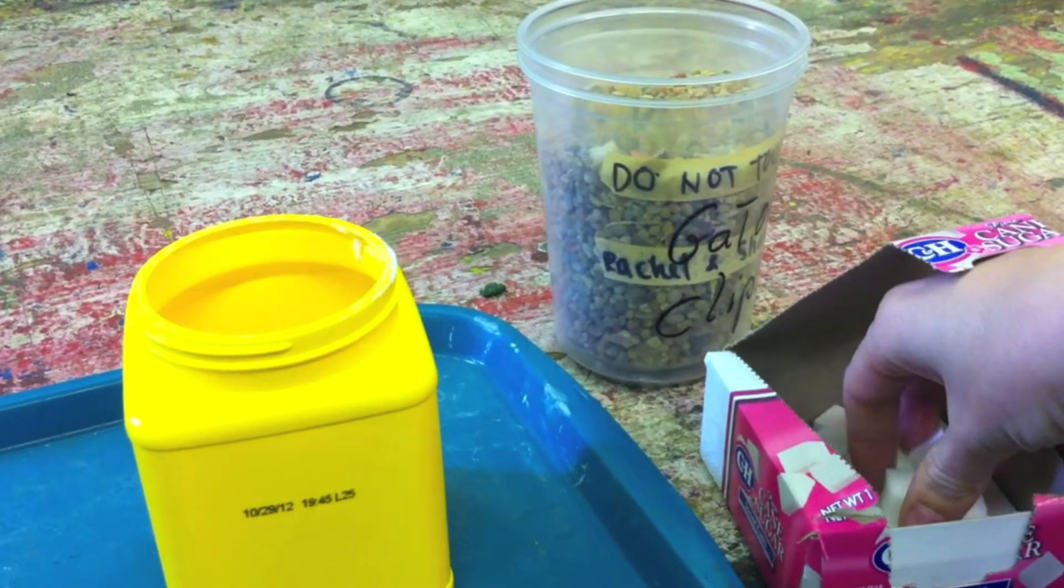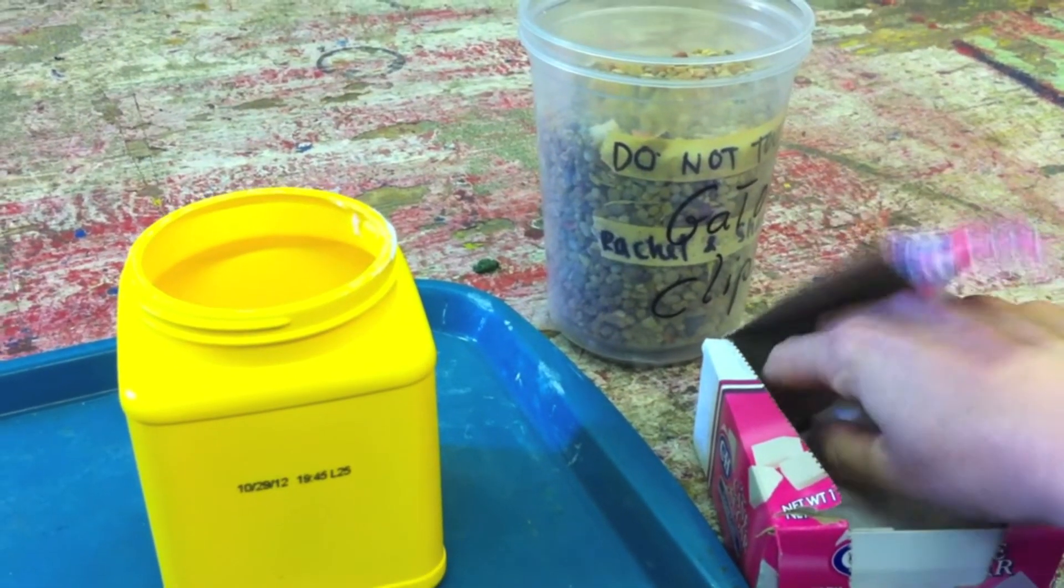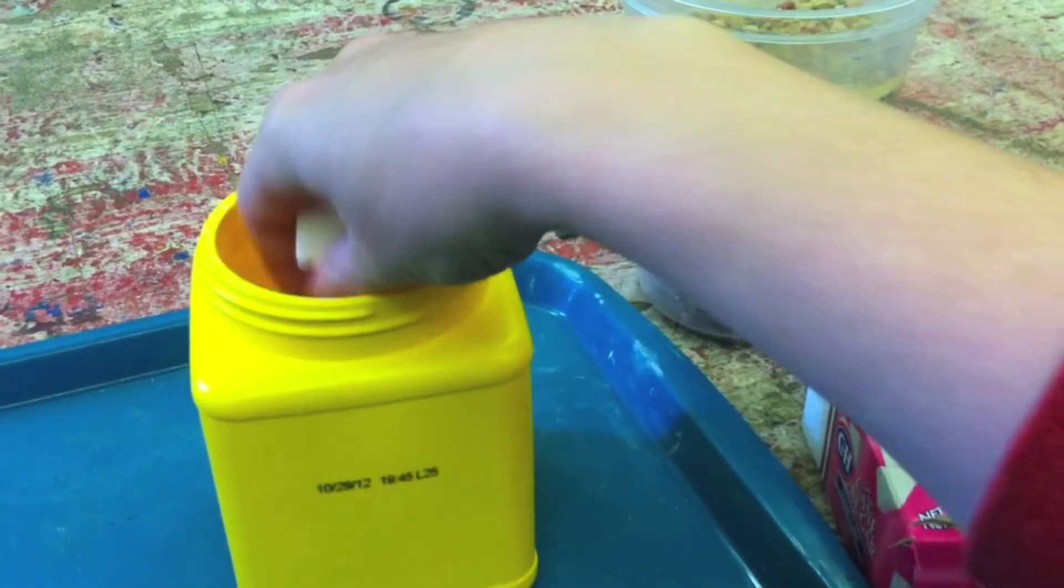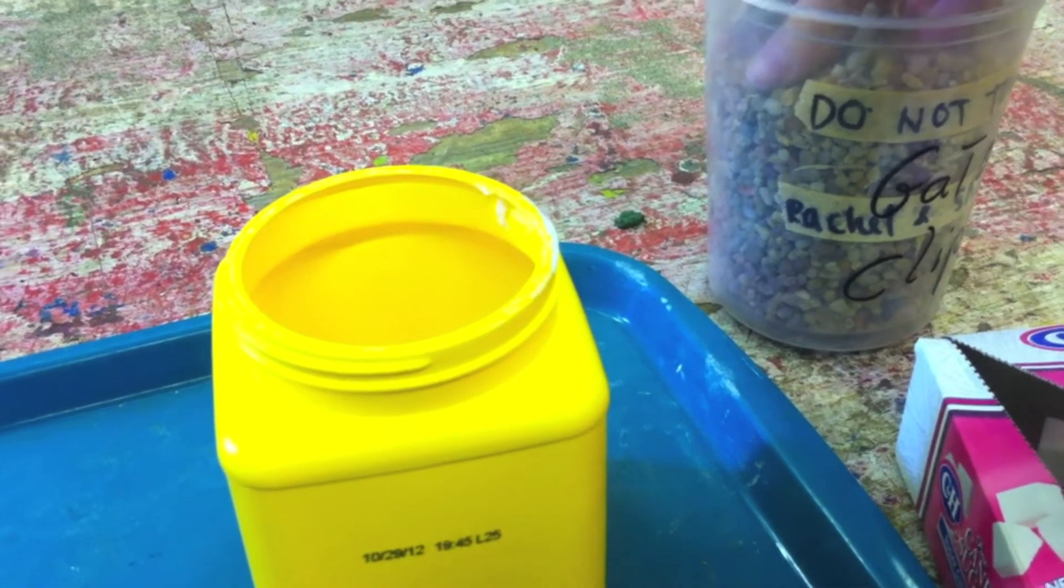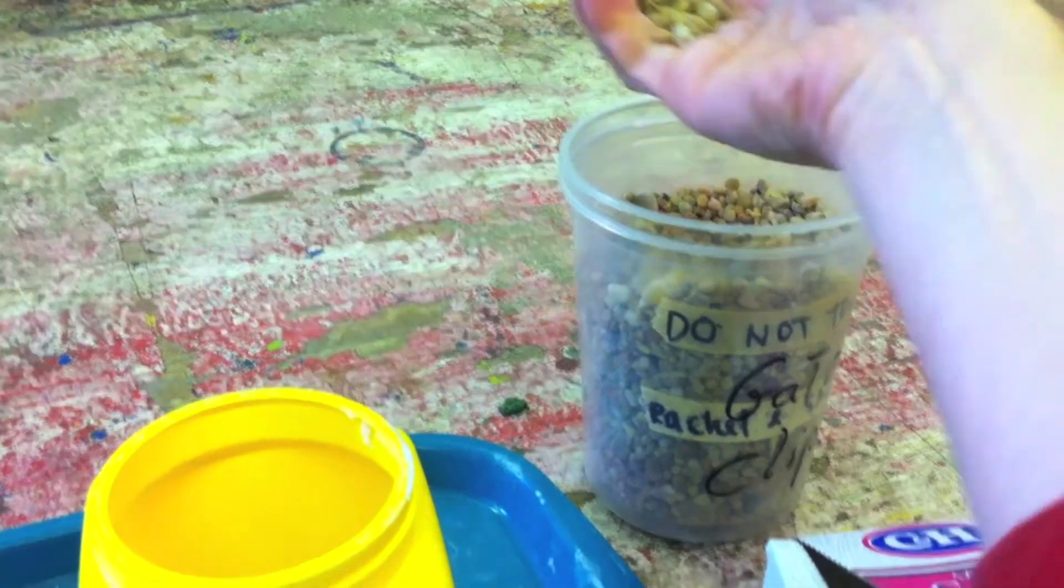In the next part of this experiment, we're going to look at how the physical weathering of the rocks changes if we add other rocks into the experiment. Like before, take 4 sugar cubes and put them into the container, and take a small handful of small stones and put them in too.